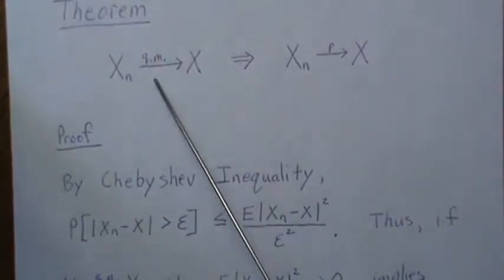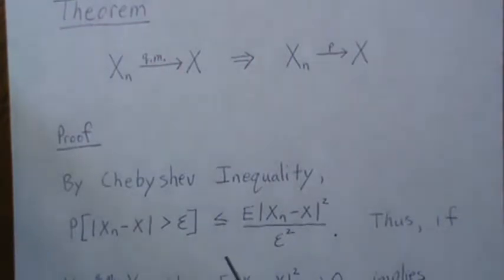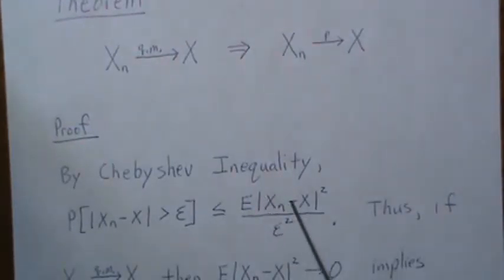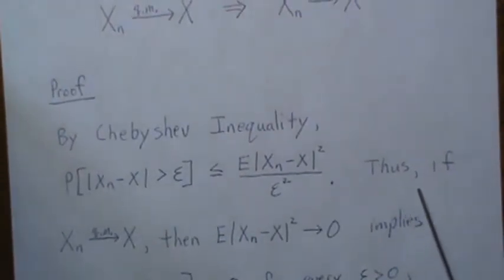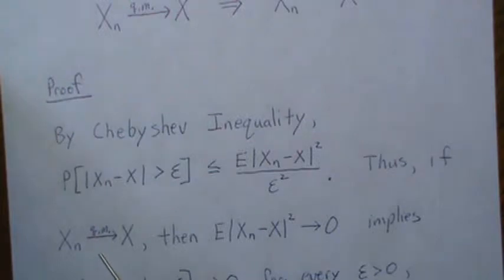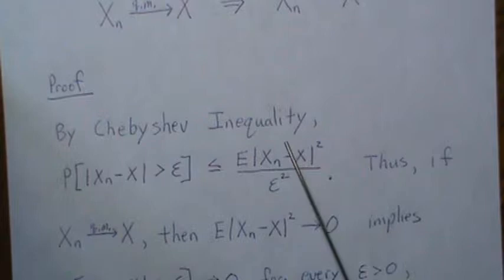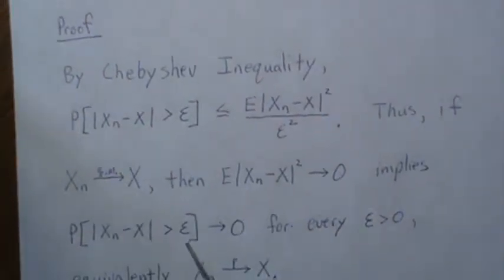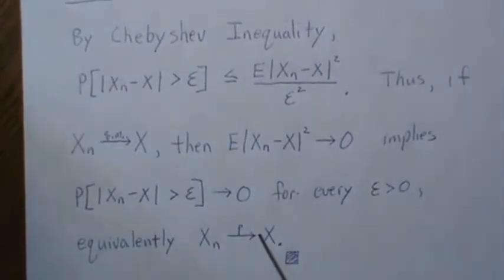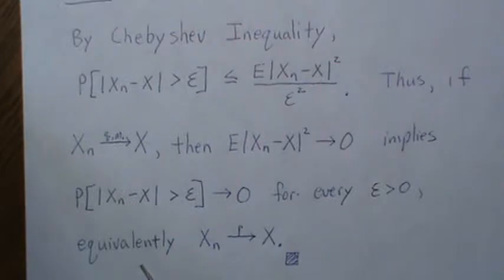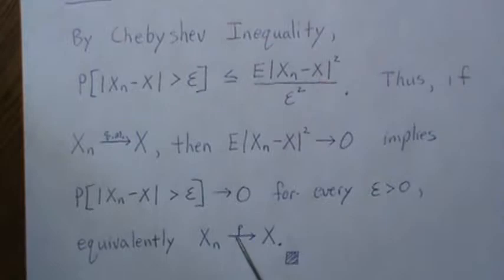We need to make the assumption that it converges in quadratic mean. This piece up here looks kind of like that, and that's the case. Thus, if we know that we converge in quadratic mean, that means this difference goes to zero, which means this one goes to zero. So it implies that this difference goes to zero for any epsilon, which equivalently means that it converges in probability. So if we assume quadratic mean, it converges in probability. That's a simple short proof.